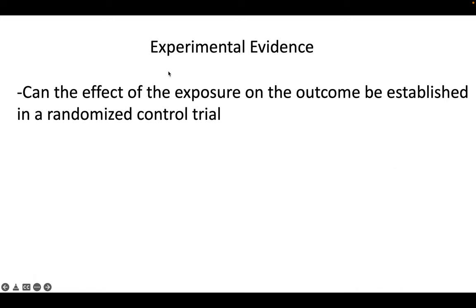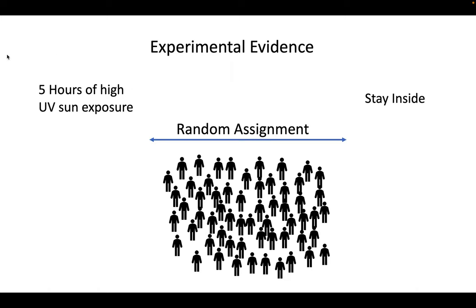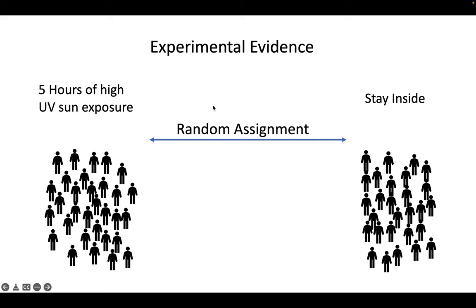Experimental evidence is another one that's all right when it's possible, but there are a lot of situations that are unethical. Like if we think something's harmful, we can't assign someone to get a sunburn if we think they're likely to get one. And some things are physically impossible to assign, like race or sex. So here we'd be looking at randomly assigning five hours of high UV exposure versus staying inside, which could experimentally provide compelling evidence that it's the UV exposure causing sunburn if we compared sunburn rates in these two groups.